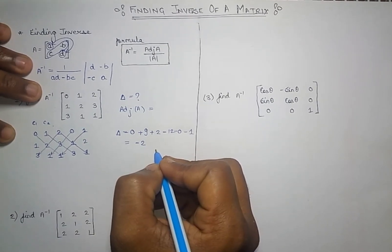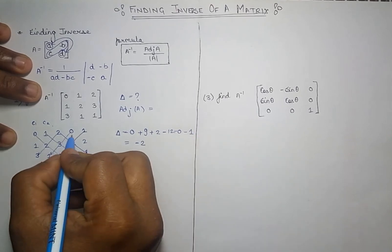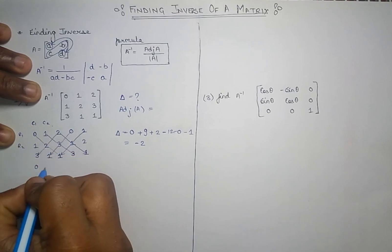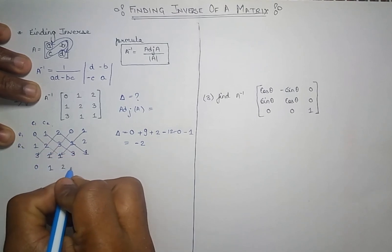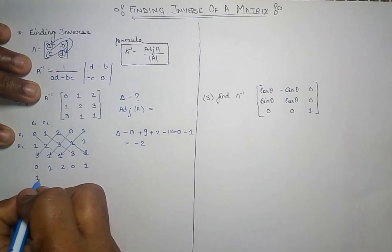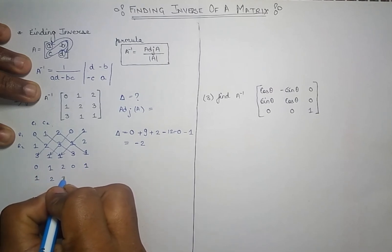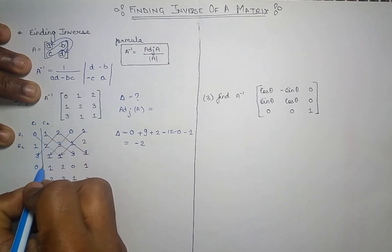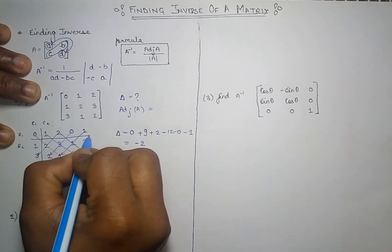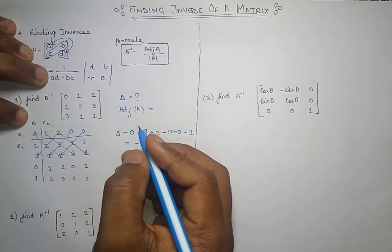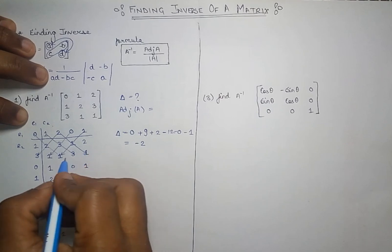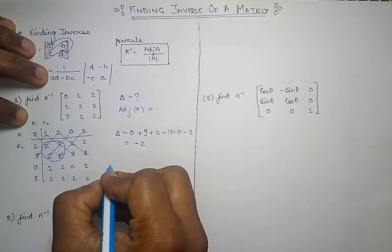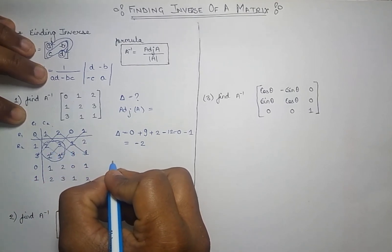For finding the adjoint, append the two columns and then place the two rows as they are. So writing: row 1 is 0, 1, 2; row 2 is 0, 1 — and 1, 2, 3, 1, 2. Then separate the first row and the first column.